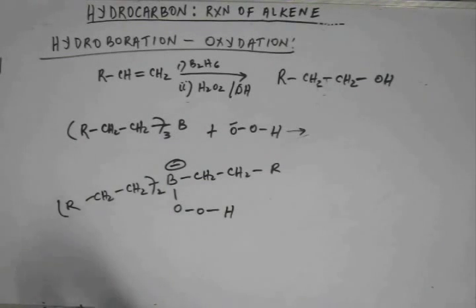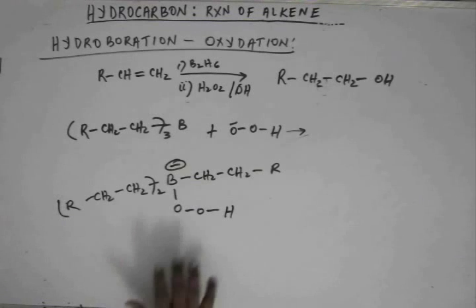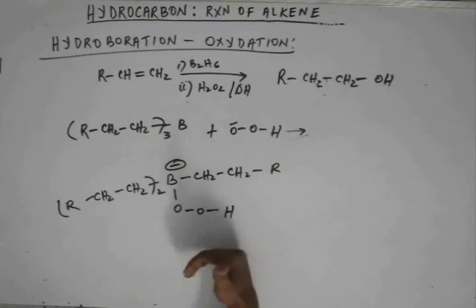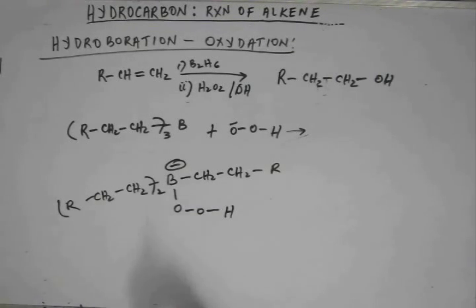Once again, boron will try to bring itself out of the misery of carrying this negative charge. We don't have a hydrogen that can be easily removed from boron. We have a R group. This is the first time we are showing this kind of migration and later on, during the preparation of phenol, this kind of migration will reappear. Let's understand what can happen.